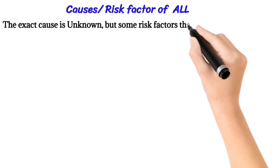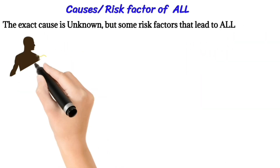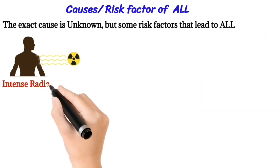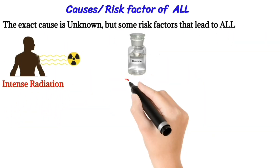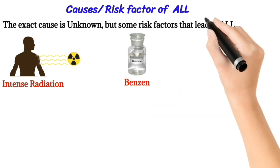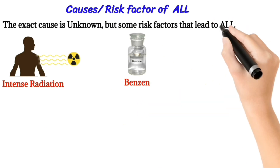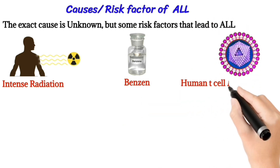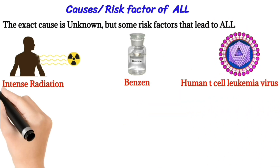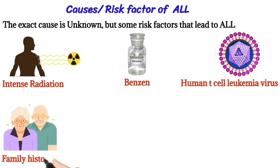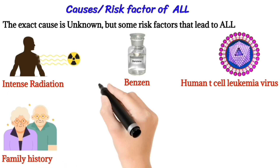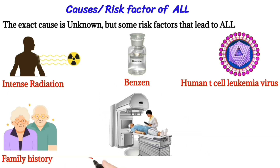Causes and risk factors of acute lymphoid leukemia: the exact cause is unknown, but some risk factors include intense radiation, benzene exposure, human T-cell leukemia virus, family history, and prior cancer treatment.